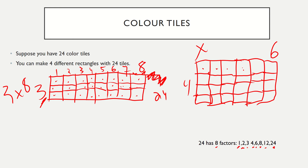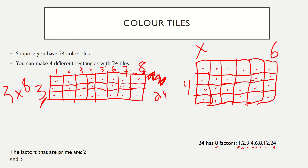Counting the color tiles — one through 24. So here's another example of how we can use color tiles to show factors.